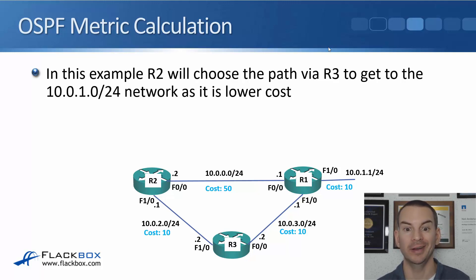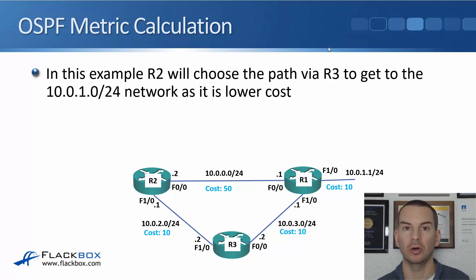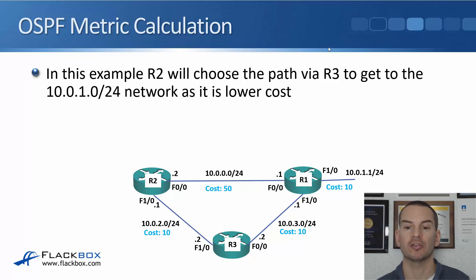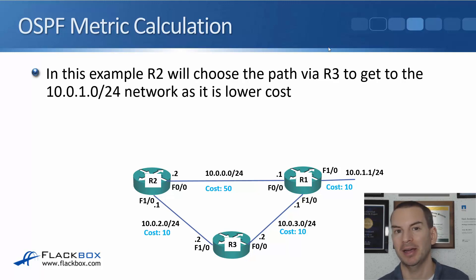Looking at an example of an OSPF metric calculation: R2 has two possible paths to get to the 10.0.1.0/24 network behind R1. It could go directly to R1 with a cost of 50 plus 10, totaling 60. Or it could go via R3 with a cost of 10 plus 10 plus 10, totaling 30. The bottom path has a lower cost — even though it's a longer hop count, it has better quality, higher bandwidth links.